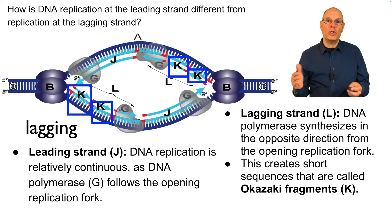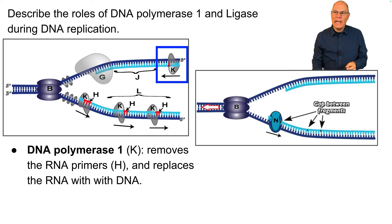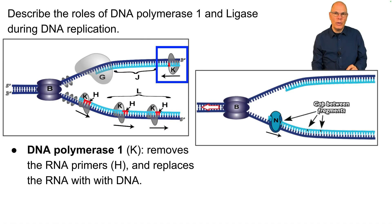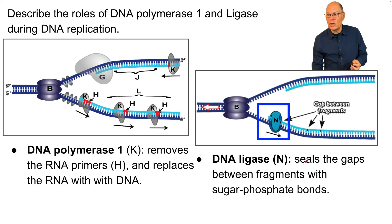Describe the roles of DNA polymerase 1 and ligase during DNA replication. DNA polymerase 1, shown at K, removes the RNA primers and replaces the RNA with DNA. Another enzyme called DNA ligase is then required to finish the process and create complete daughter strands by sealing the gaps between fragments with sugar-phosphate bonds.